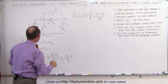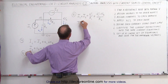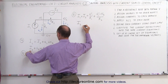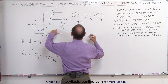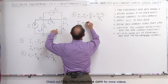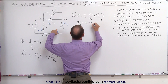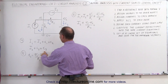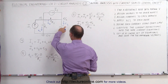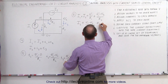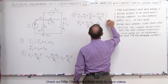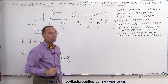For the second equation, we plug in the definitions similarly: capital I2 + (V1 - V2)/R2 = V2/R3. So now we have two equations and two unknowns, V1 and V2.